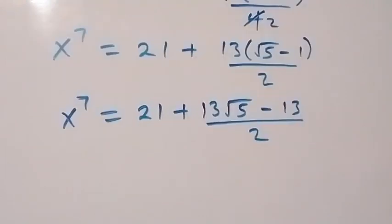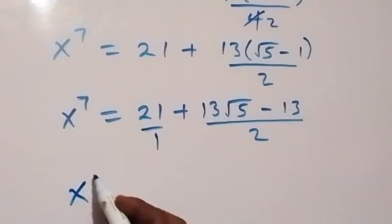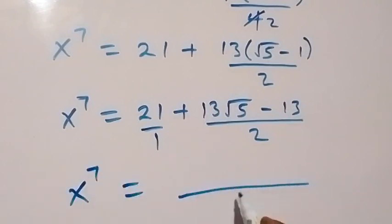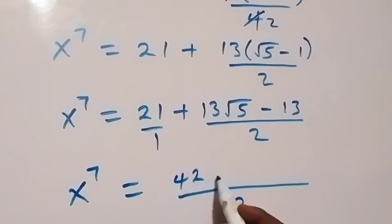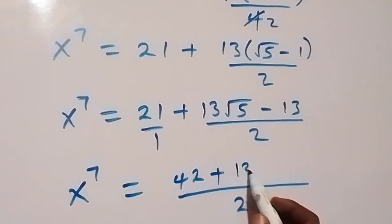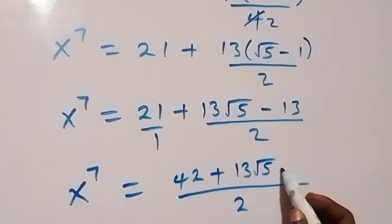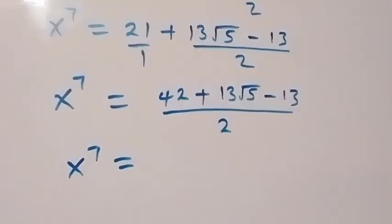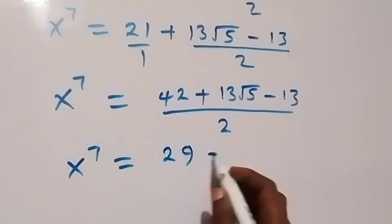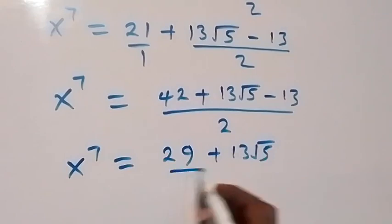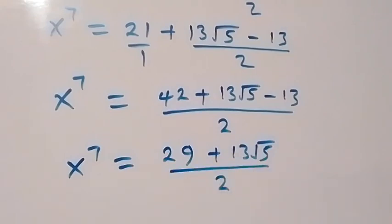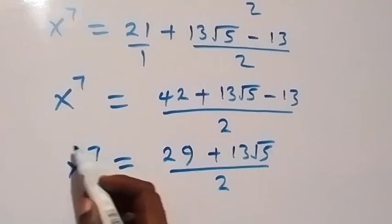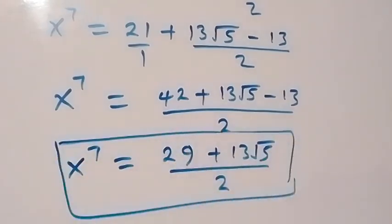Combining over a common denominator of 2, we get (42 minus 13 plus 13 root 5) over 2, which equals (29 plus 13 root 5) over 2. Therefore x to the power 7 equals (29 plus 13 root 5) over 2.